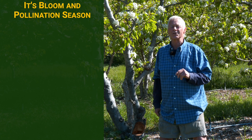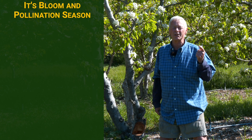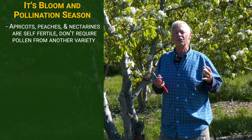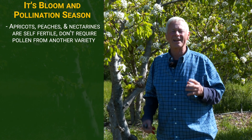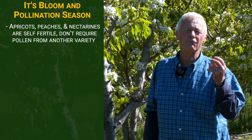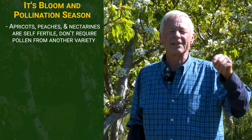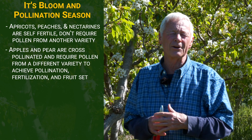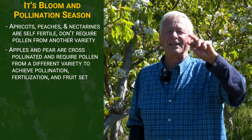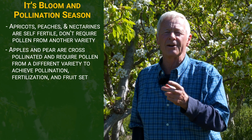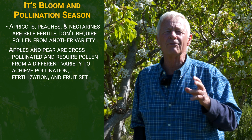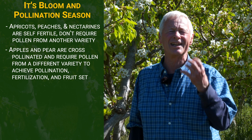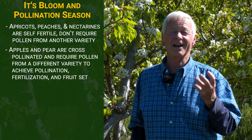Let's talk apples and pears as opposed to apricots, peaches, and nectarines. Apricots, peaches, and nectarines are self-fertile — they don't need cross-pollination. They can accept the pollen from the flowers on the tree itself; they don't need pollen from another variety. Apples and pears, on the other hand, are cross-pollinated — you need pollen from a different variety. Say your pear is Seckel: you need pollen from a Bosc or a Comice pear to achieve pollination, fertilization, and fruit set. Fruit — the object of our desires.